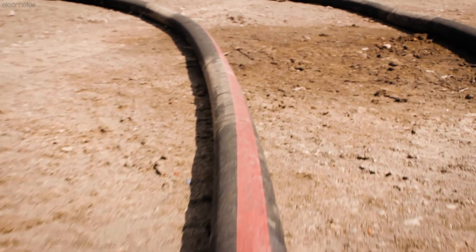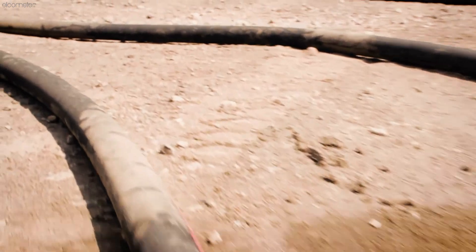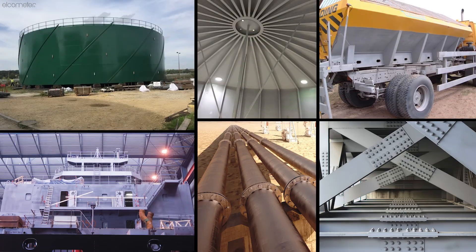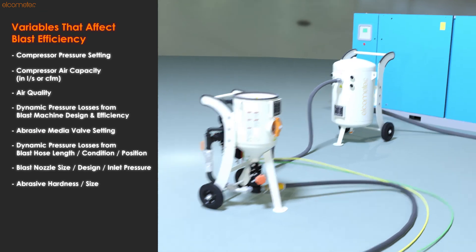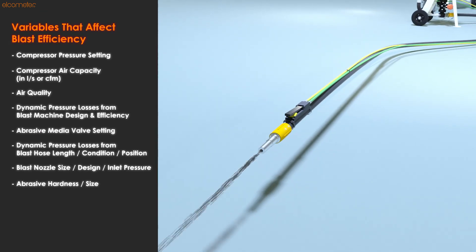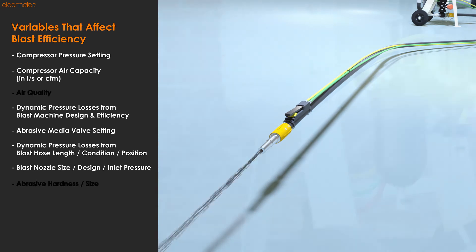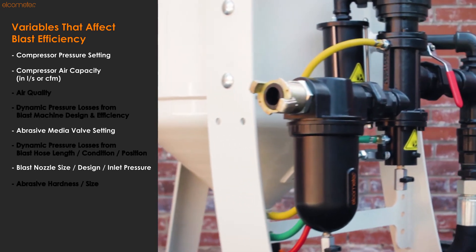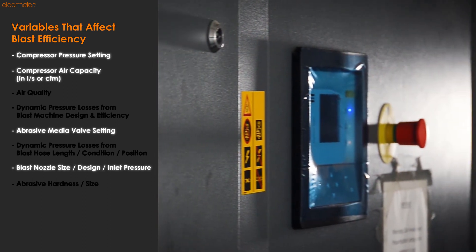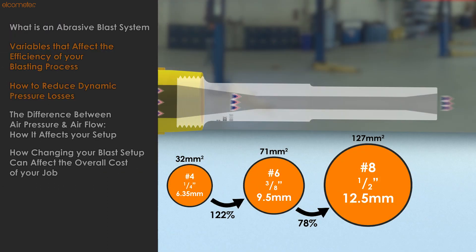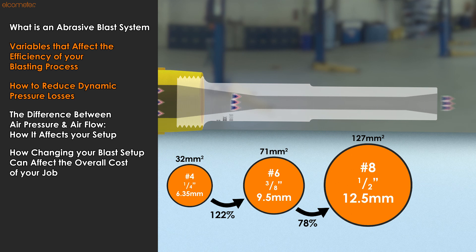While having a shorter blast hose means less pressure loss, depending on what you're blasting, you may be restricted by what your minimum blast hose length can be. Now we've identified the key variables that affect the efficiency of your blasting process and discussed a few of them, including how to reduce dynamic pressure loss. In part three, we'll be discussing the effects of the remaining variables, which will lead us to explore the difference between air pressure and air flow, and how it affects your blasting setup.